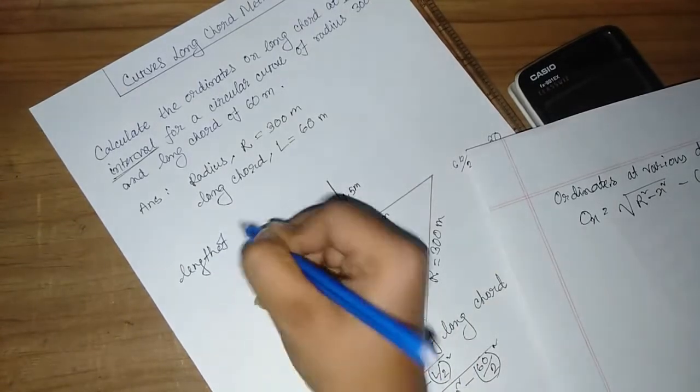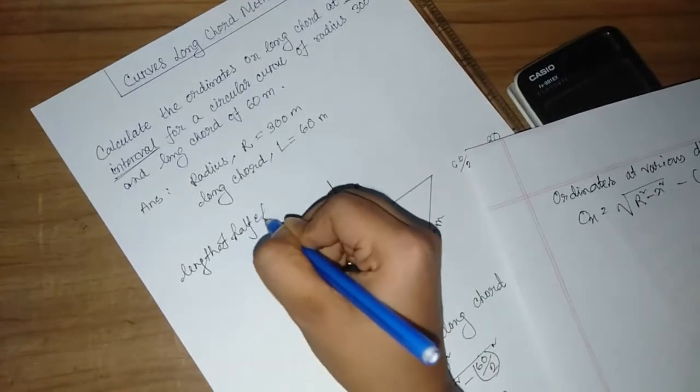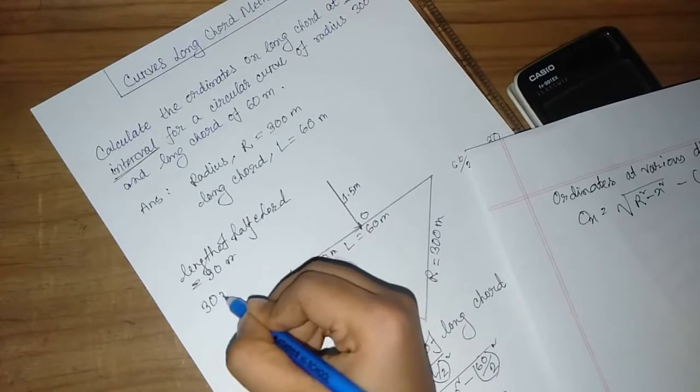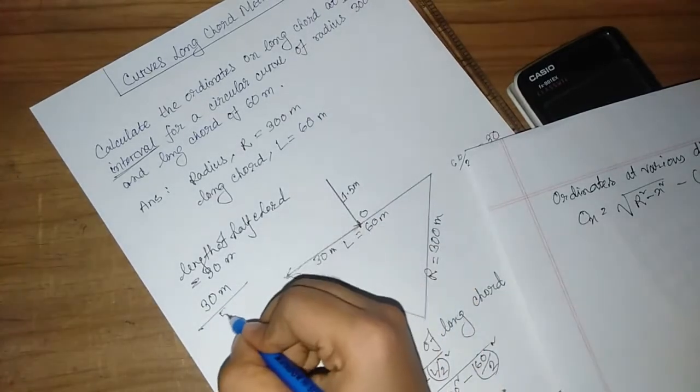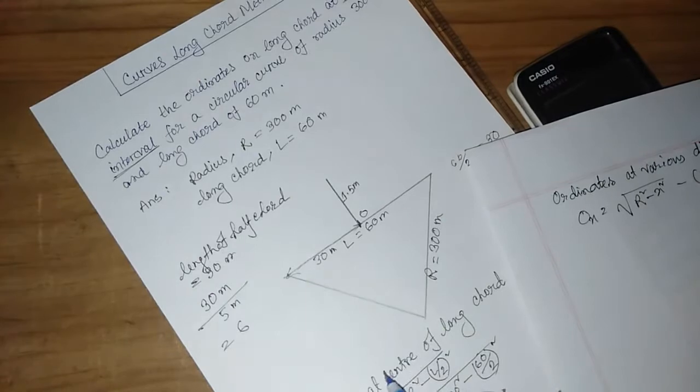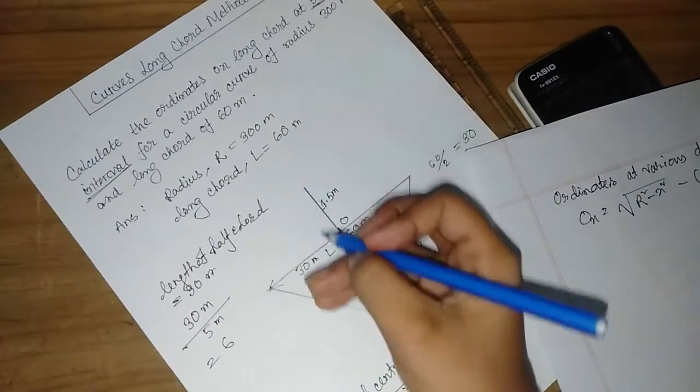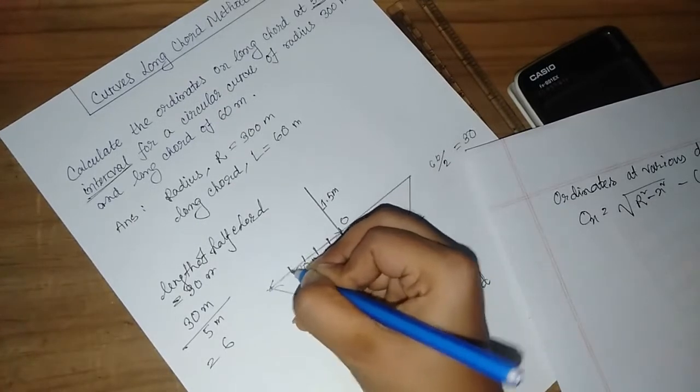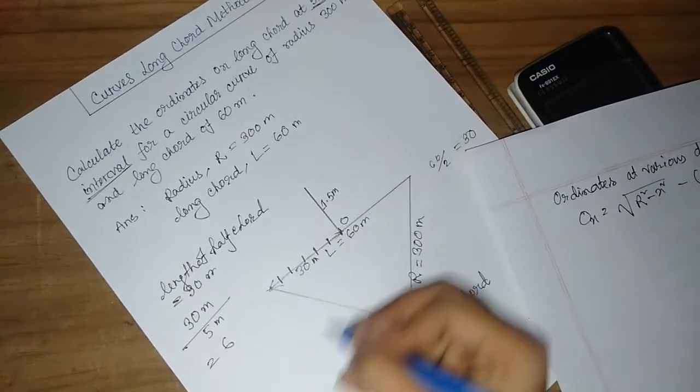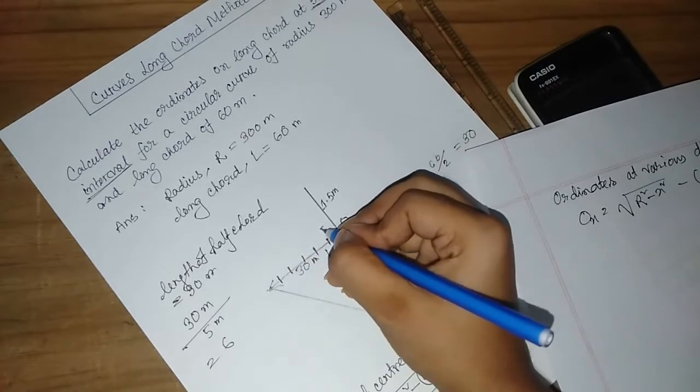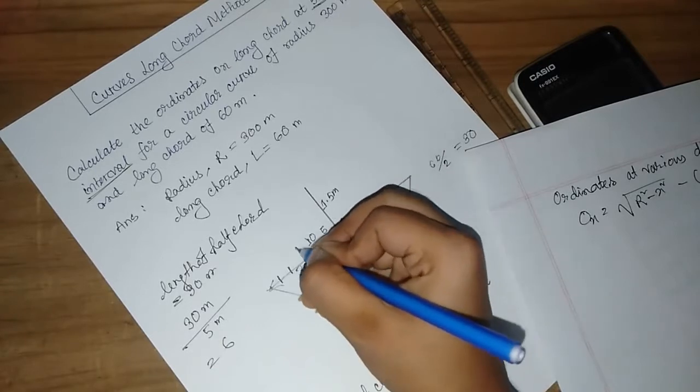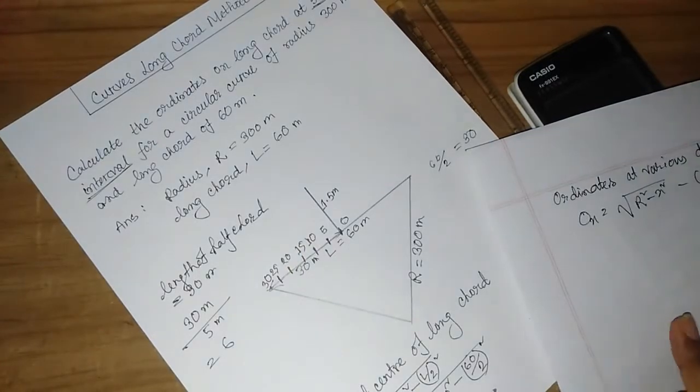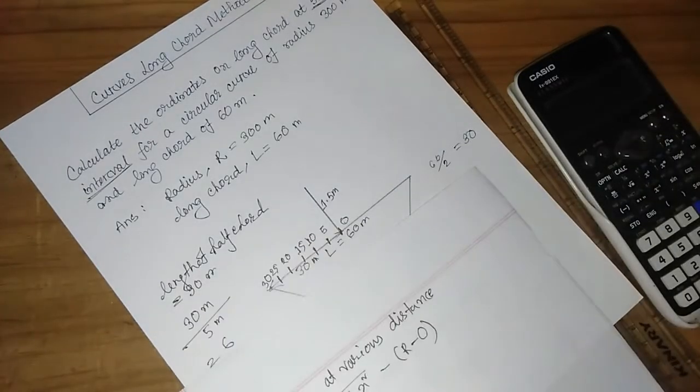The length of half chord is equal to 30 meter. If we divide 30 meters by 5 meter intervals, we get 6 ordinates at: 0, 5, 10, 15, 20, 25, and 30 meters.